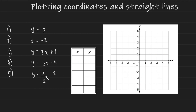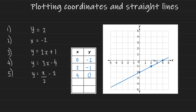Now let's plot equation five, y equals x over two minus two. You want to avoid decimal values for coordinates, so since we're dividing by two, choose multiples of two for x: zero, two, and four. When x is zero, y equals zero divided by two minus two, which gives negative two. When x is two, y equals two over two which is one, minus two is negative one. And when x is four, y equals four over two which is two, minus two is zero. If we plot these and connect the coordinates with a line, this is the line with equation y equals x over two minus two.